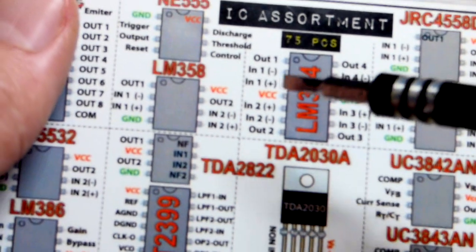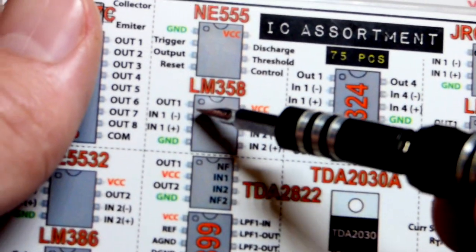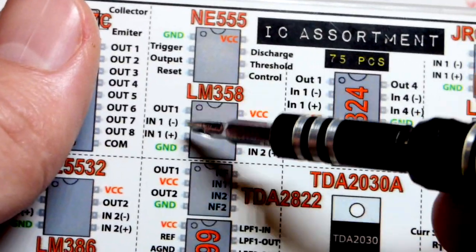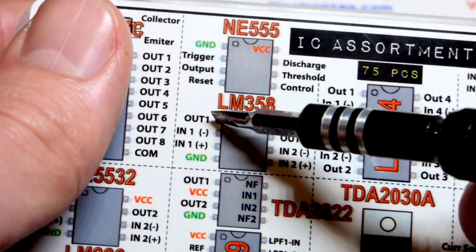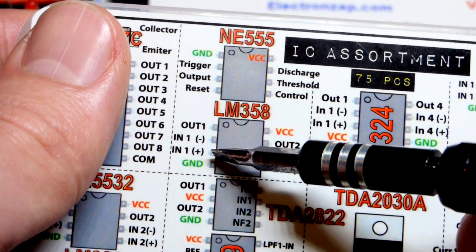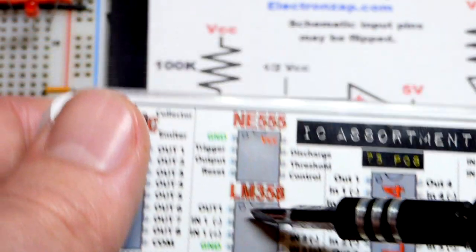I'm using the LM358 from this kit here. There's actually two of them. We're only going to use this one on the left. Output is the top pin. Inverting input is the second pin down, and the non-inverting input is third pin down.